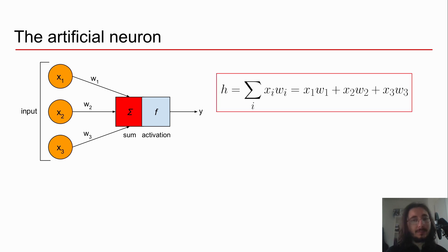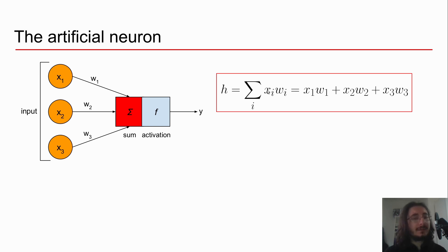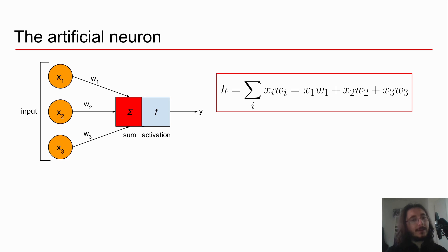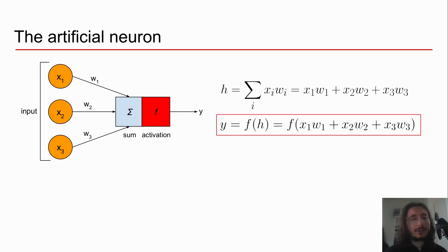Let's look at the sum first. h stands for the net input, and h is simply the sum over all inputs multiplied by their respective weights. So h equals x1·w1 + x2·w2 + x3·w3. In the first phase, the artificial neuron computes this sum and arrives at a net input. Then in the second phase, the output y is a function of the activation function f applied to h, the net input.